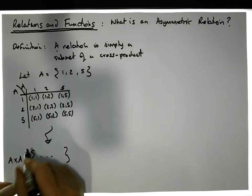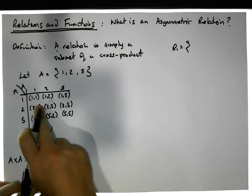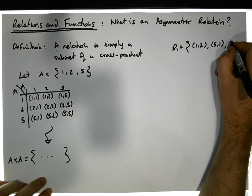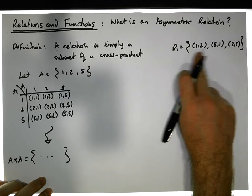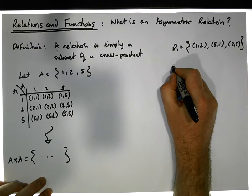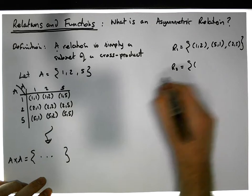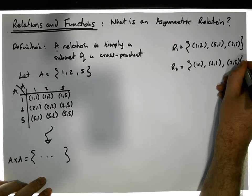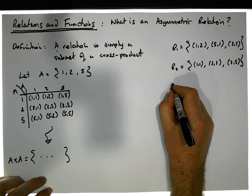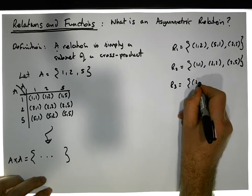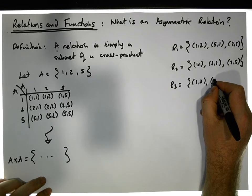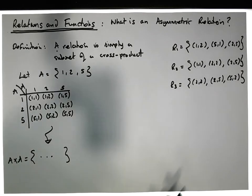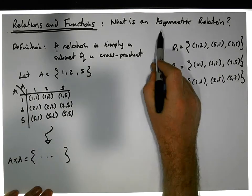For example, R1 might be the set containing (1,2), (5,1), and (2,5). This is a relation because it's a subset of the cross product. R2 could be {(1,1), (2,2), (2,5)} — another valid relation. And R3 could be {(2,2), (2,5), (5,2)} — again a relation, a subset of the cross product. We're interested in determining which of these are asymmetric.